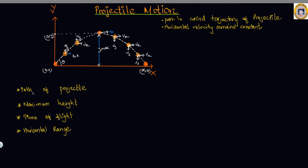We are also going to see the maximum height, time of flight, and the horizontal range. Since it's a two-dimensional problem, we can split it into a one-dimensional problem of two kinds: one is horizontal along the x-axis, whereas the other is vertical along the y-axis. Let us focus on the horizontal axis — the horizontal motion.